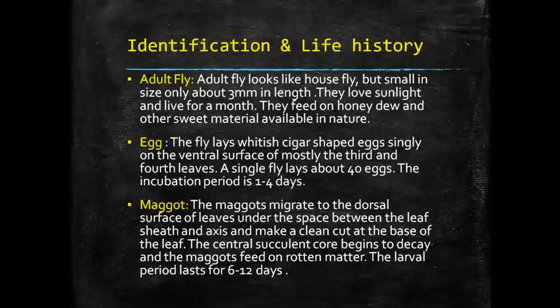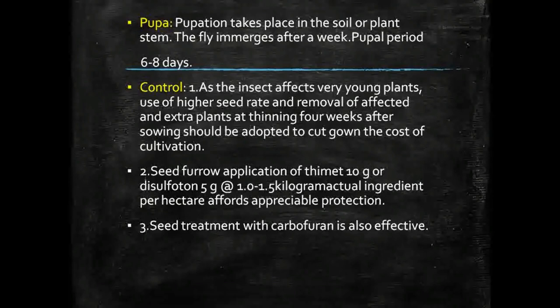The maggots move to the space between the leaf sheath and axis and make a clean cut at the base of the leaf. The central succulent core begins to decay and the maggots feed on the rotten material. The larval period lasts for six to twelve days.